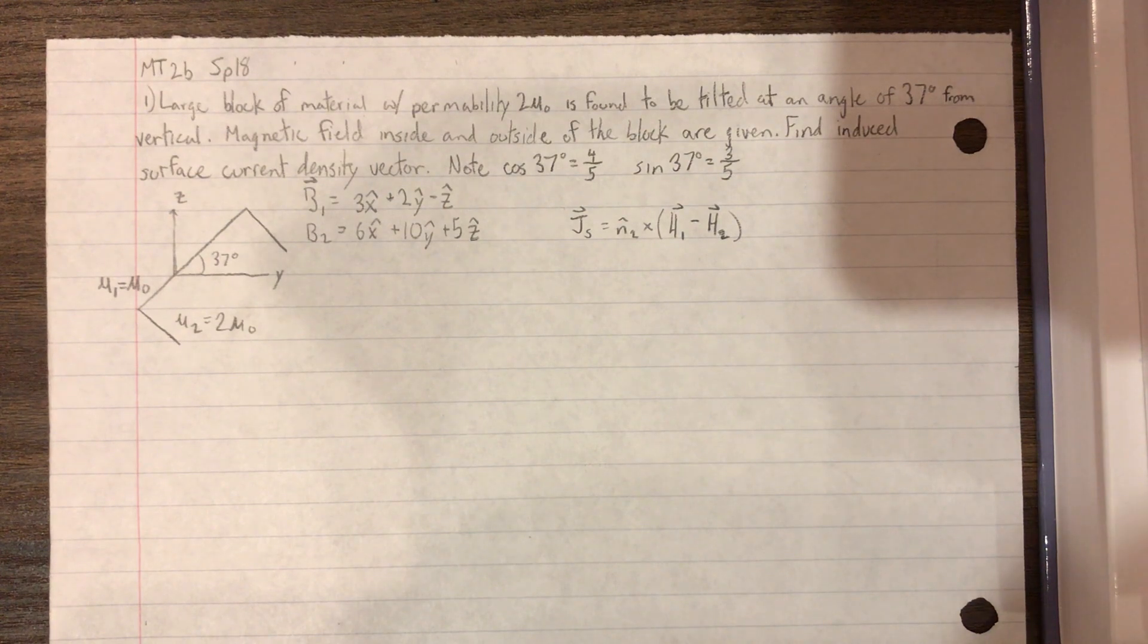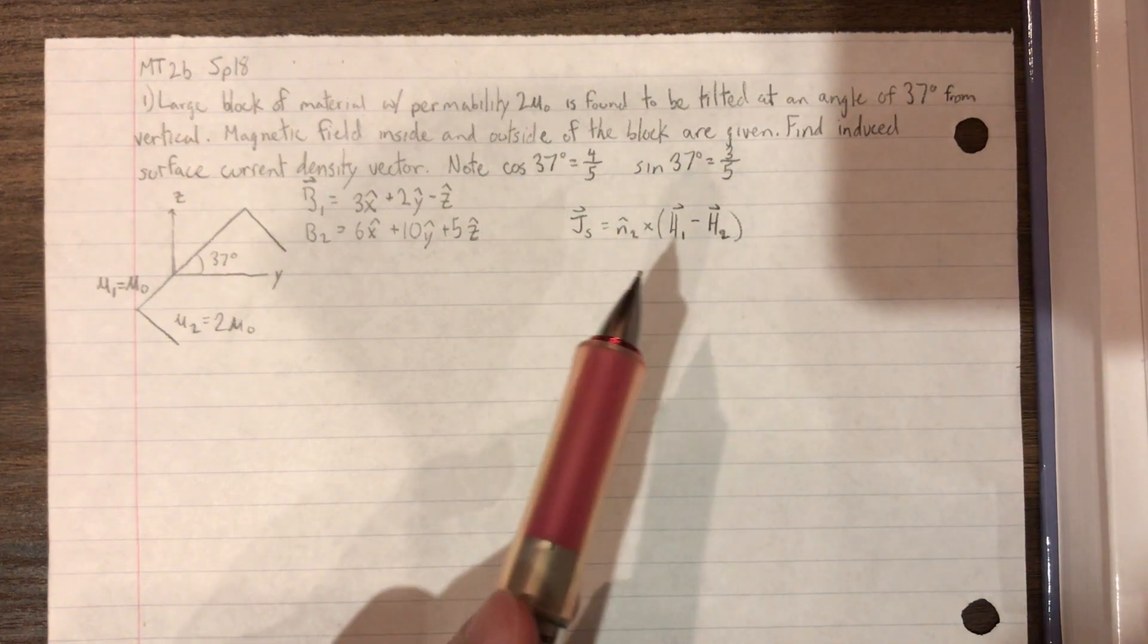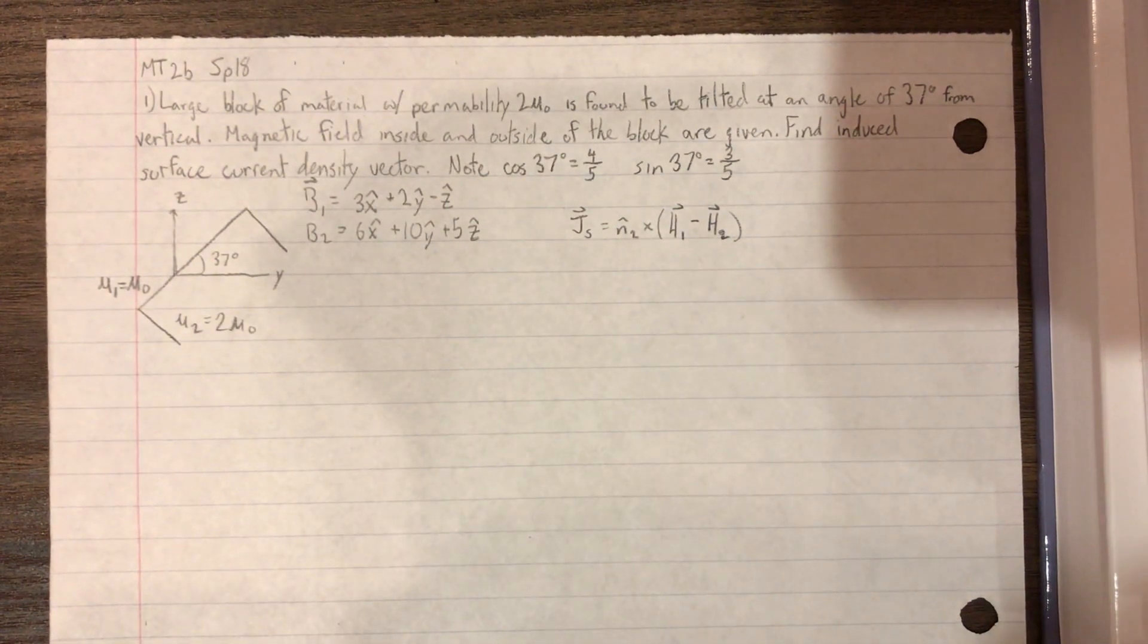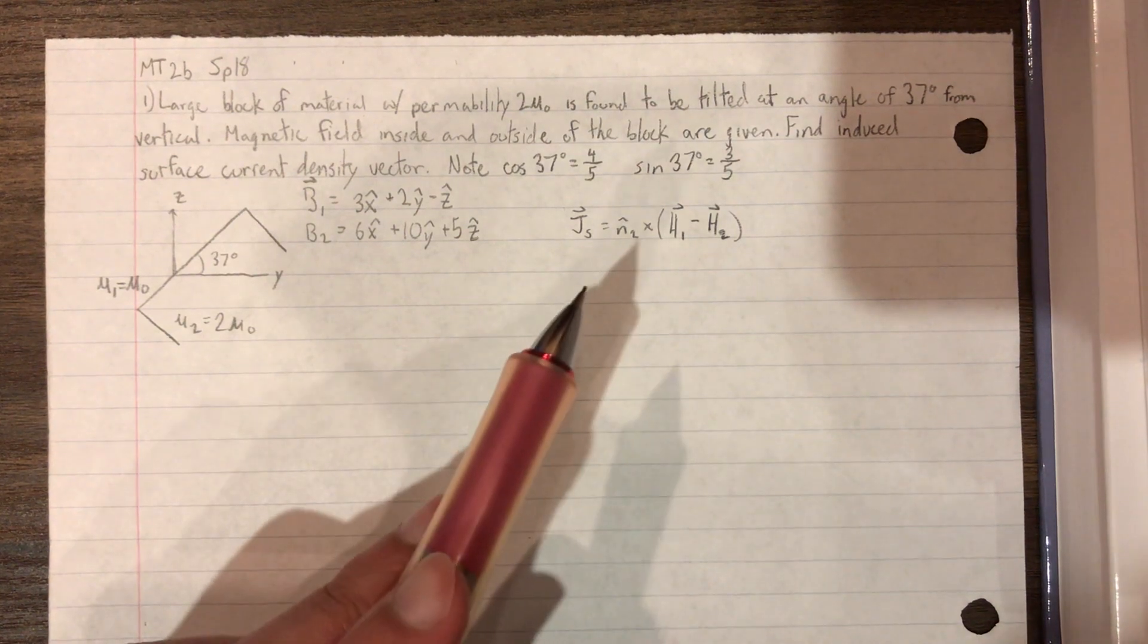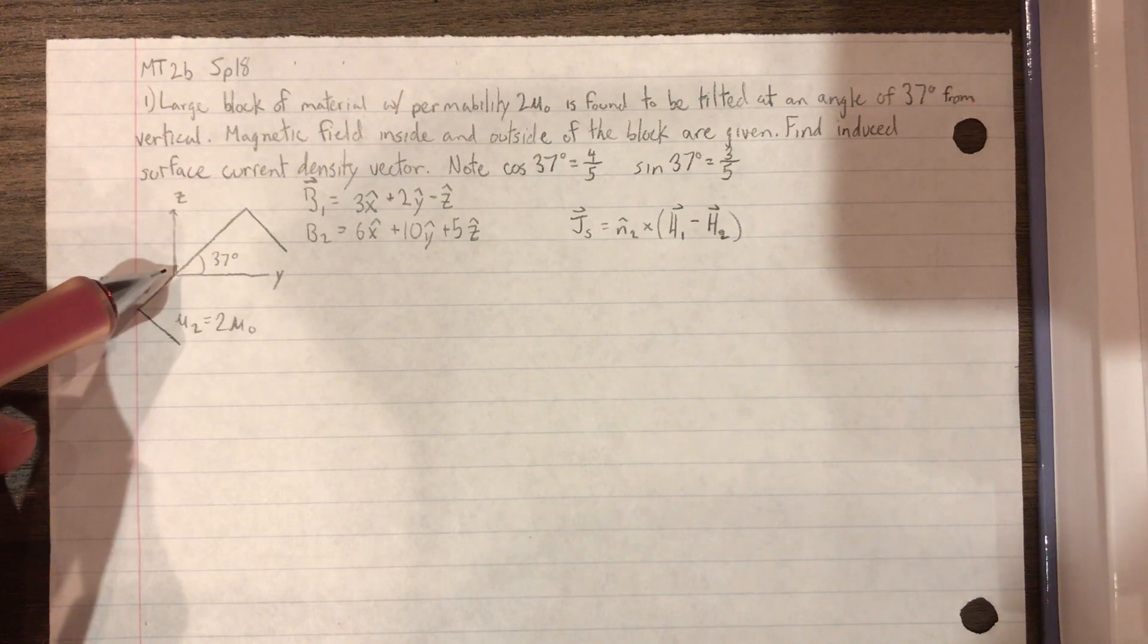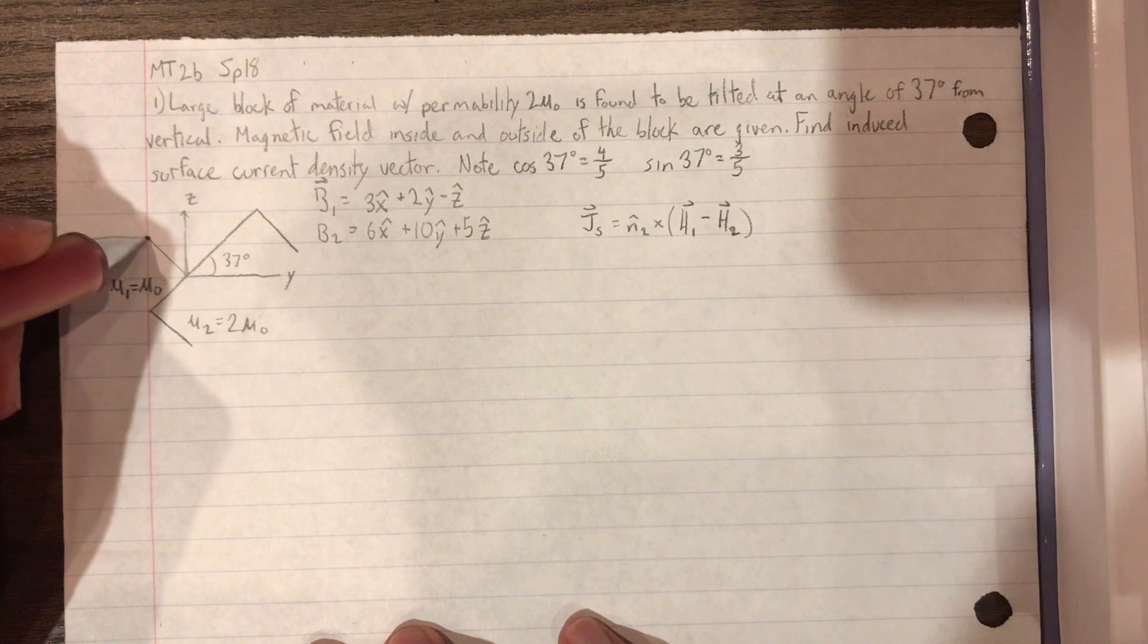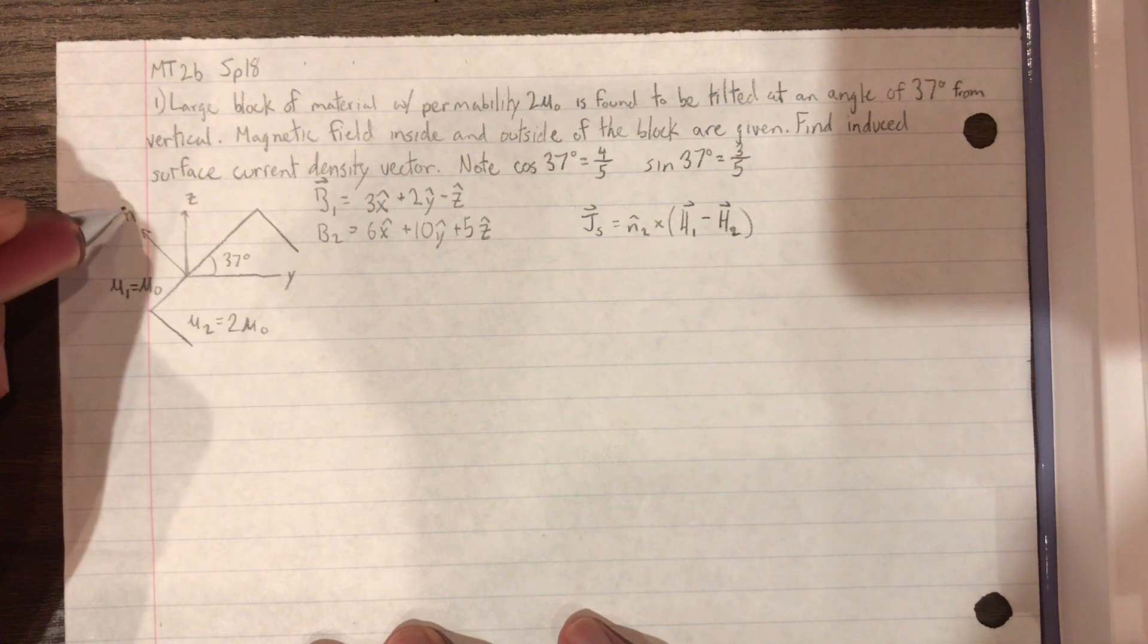Since we want to find the induced surface current density vector, we want to use this equation right here. And to find our N2, we're going to draw it perpendicular to the surface. So this is going to be our N hat.